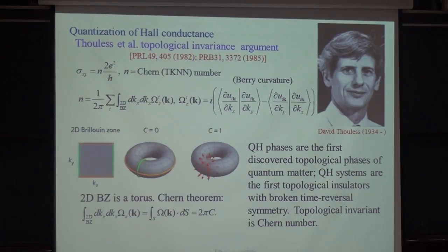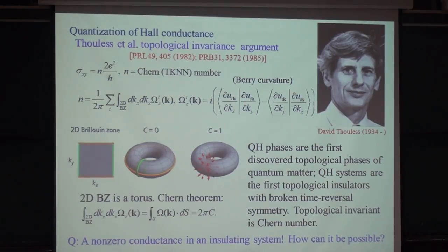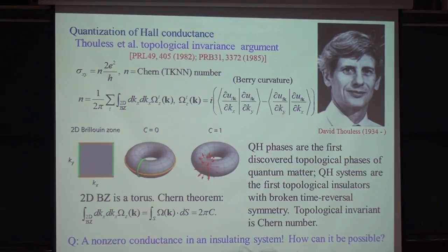This is actually the first realization that the quantum Hall system is a topological system, and the quantum Hall insulating system is the first topological material in current terminology. Then the question is: we have a bulk insulating state with zero longitudinal conductance, yet how is it that we have a non-zero transverse conductance?